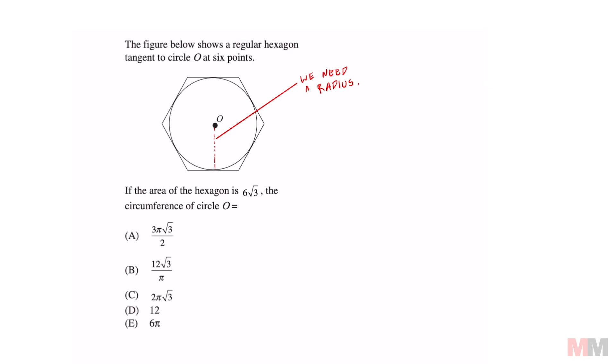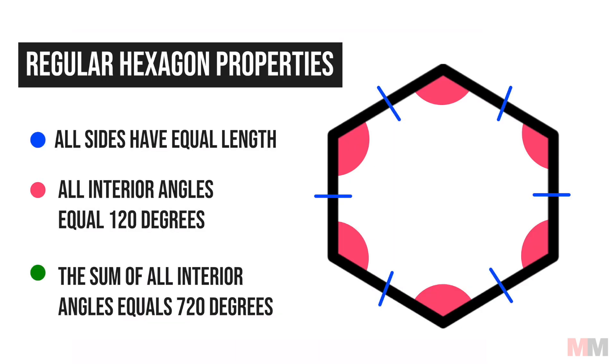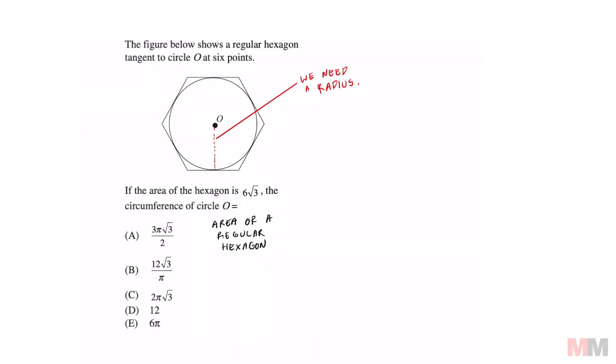First, we need the area for a regular hexagon. A regular hexagon is a hexagon with six equal sides and six equal angles. The formula for that area is (3√3/2)a² where a represents one side of that hexagon. We're going to set that equal to our given statement, 6√3, because that's the area.